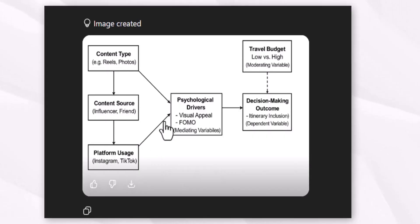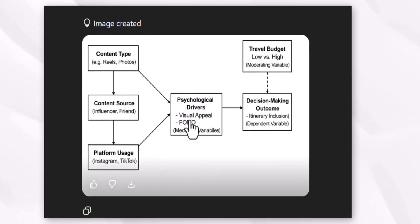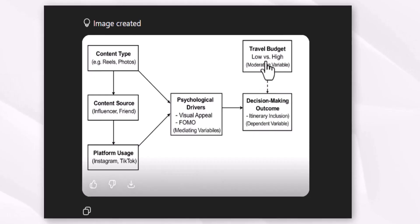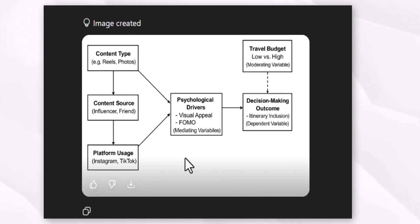You can see that content type, content source, platform use, and psychological drivers are the independent variables. These are the mediating variables and this is the dependent variable, and they are inter-relating with the moderating variable.